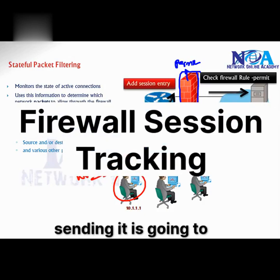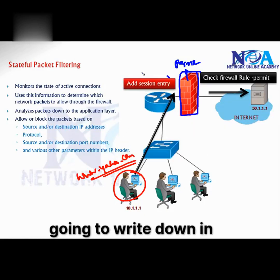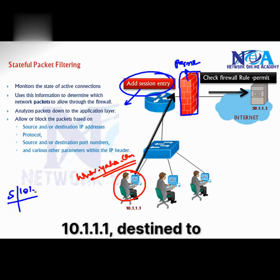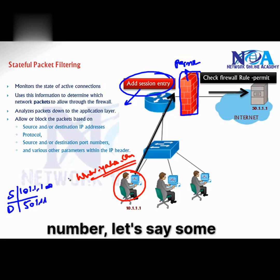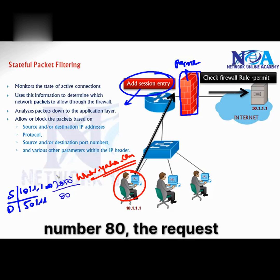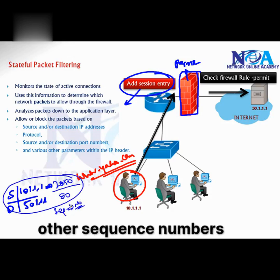But before, while it is sending, it is going to add session entries. It is going to write down in the session table saying that from this source — let's say 10.1.1.1 — destined to 50.111, which is the Yahoo server, port number, let's say some random port number, 2050 something, on port number 80, the request was sent. Apart from that, some other sequence numbers and other things it will write down.